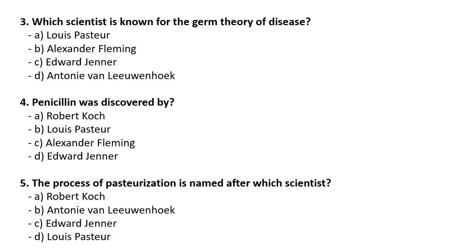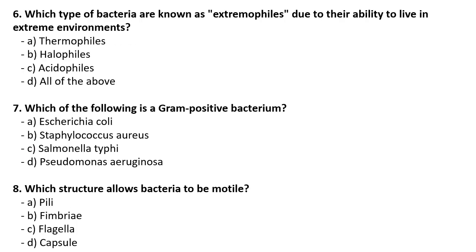Which scientist is known for the germ theory of disease? The correct option is Louis Pasteur. Penicillin was discovered by — a very famous question — Alexander Fleming. The process of pasteurization is named after which scientist? It is named after Louis Pasteur.